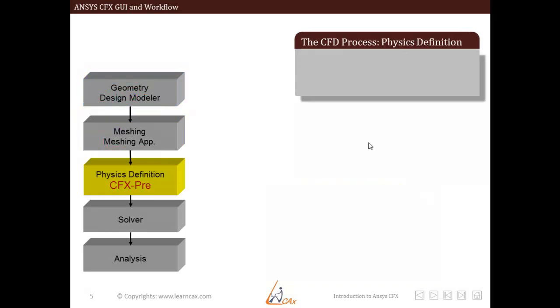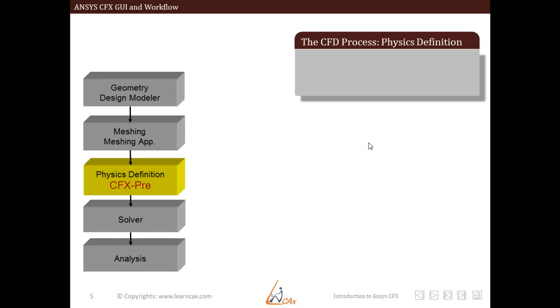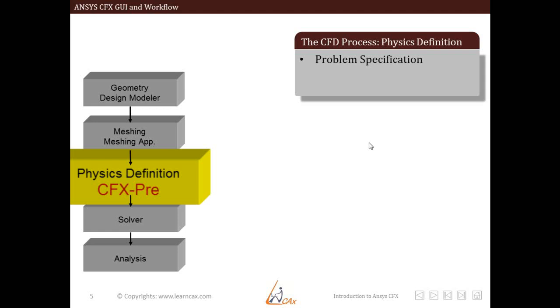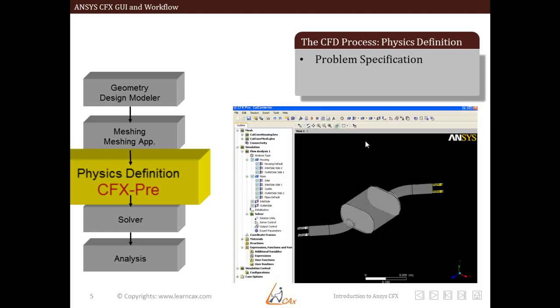And the next step is to define the physics of the problem. And we do that particular problem definition in CFX-PRE. So, we specify the problem in CFX-PRE. As you can see, this is a particular GUI of CFX-PRE. And this is used just to define your CFD problem. That is, to define the boundary conditions, to define the physics involved, and to define the entire problem definition. In CFX-PRE, you do not solve the problem. You just define the problem. So, we define different physical models, material properties, and boundary conditions in CFX-PRE.